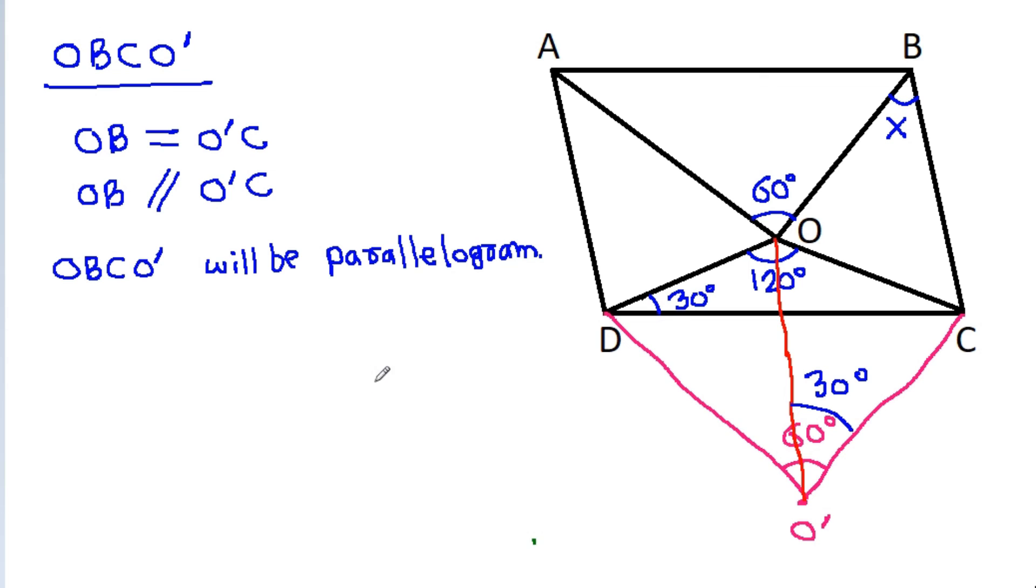And in any parallelogram, these two angles are equal. So, in OBCO', this angle is 30 degrees and this angle is X. So, X will be equal to 30 degrees.